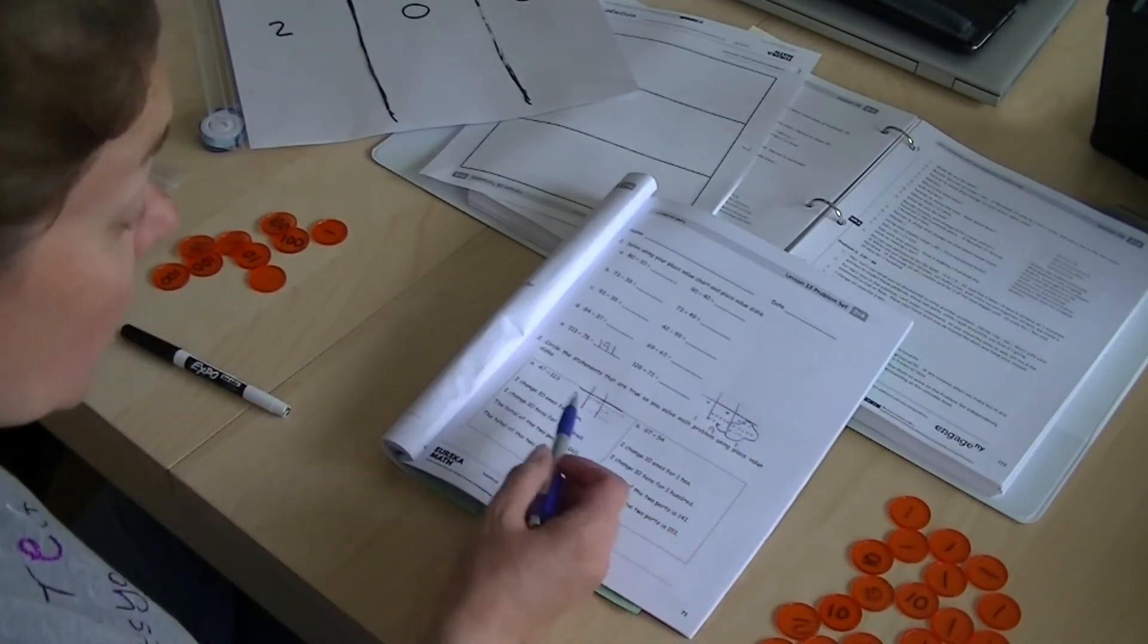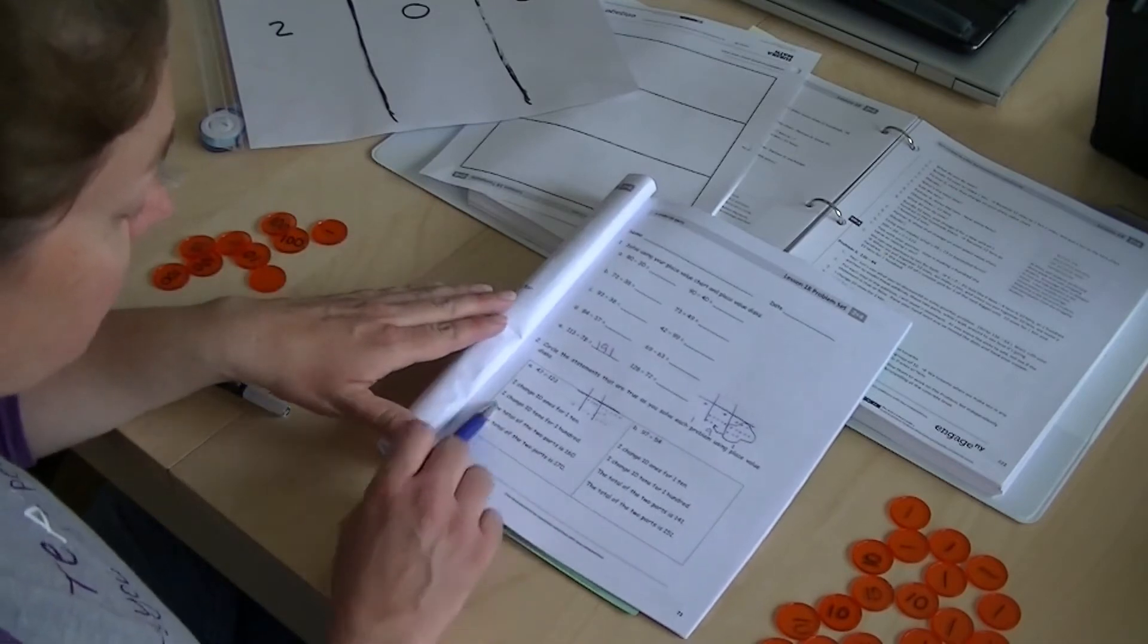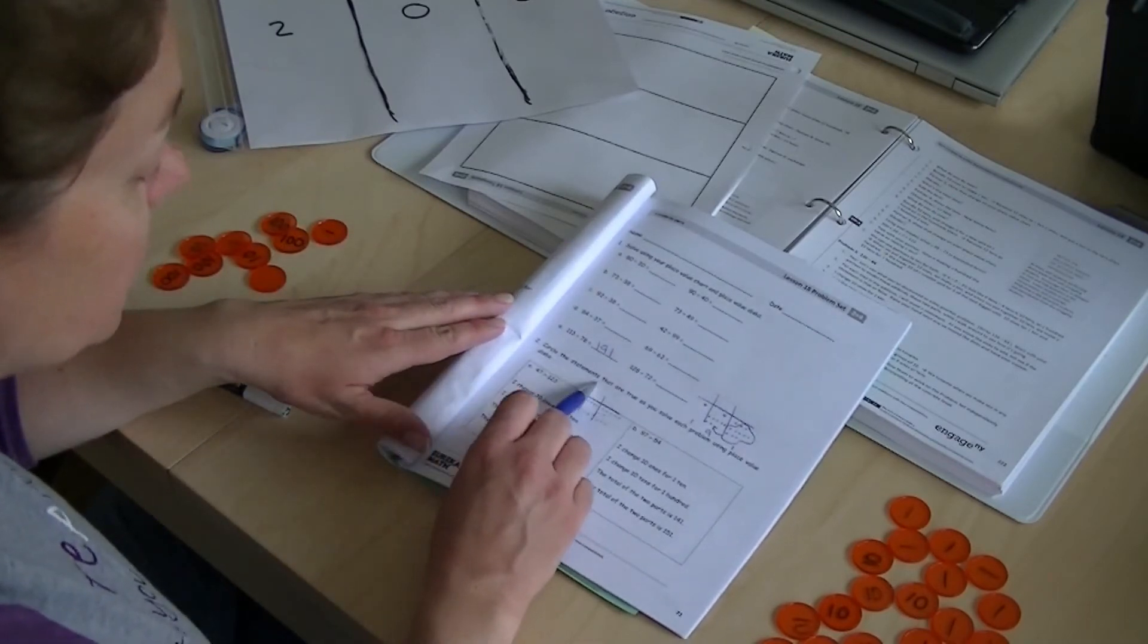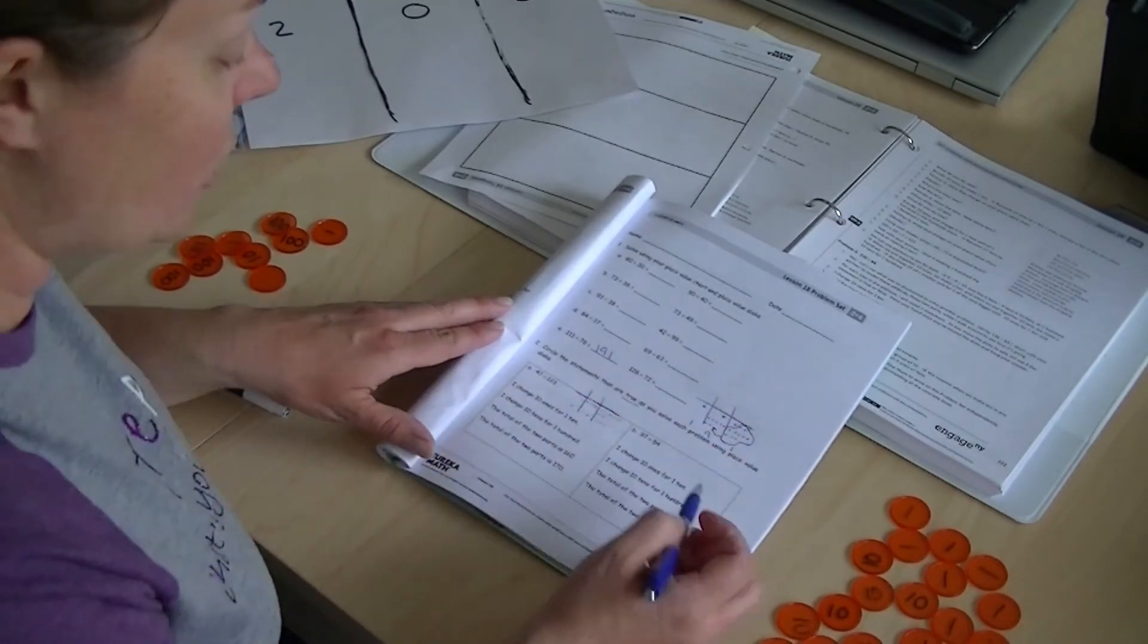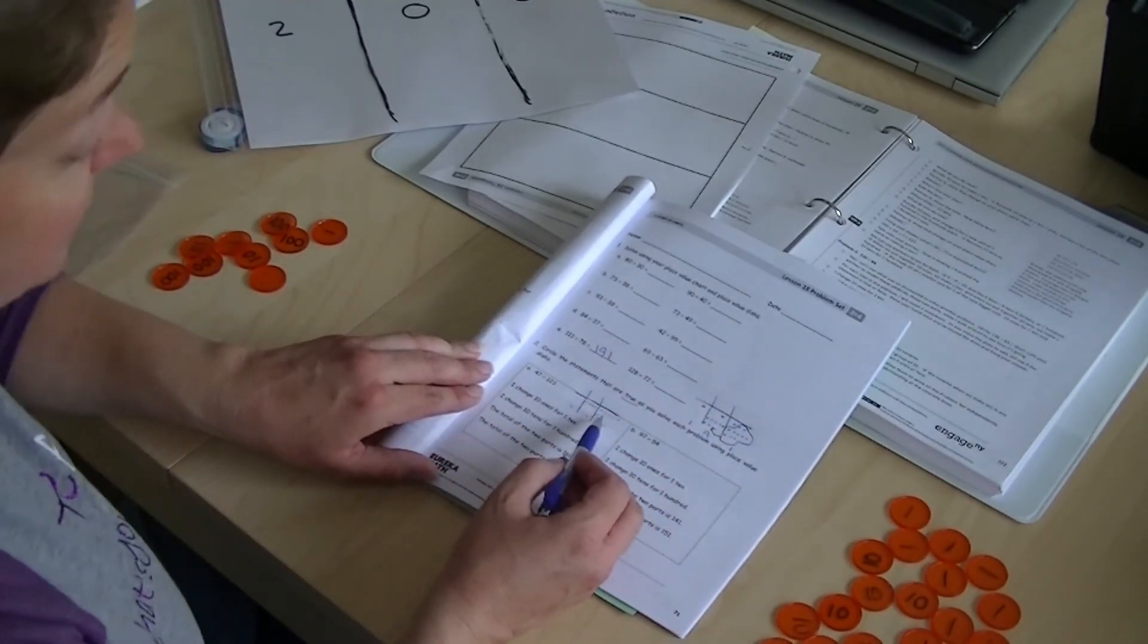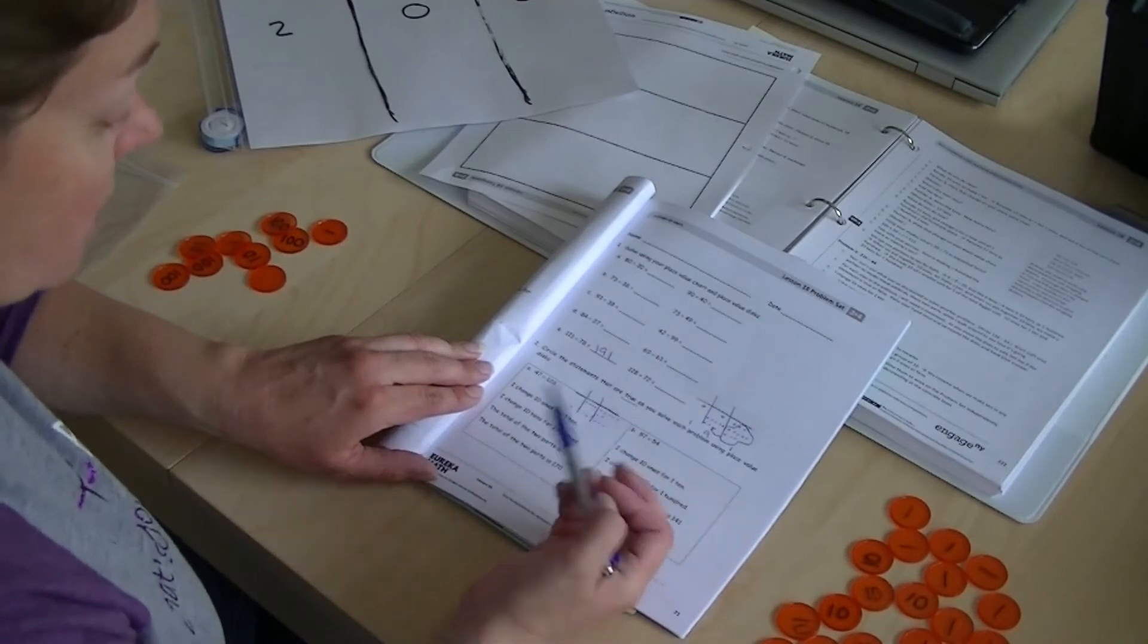Okay. Now, what they're wondering is what did you have to do? All right. So circle the statements that are true as you solve each problem using place value discs. So I'm using my place value discs here. I just drew them.